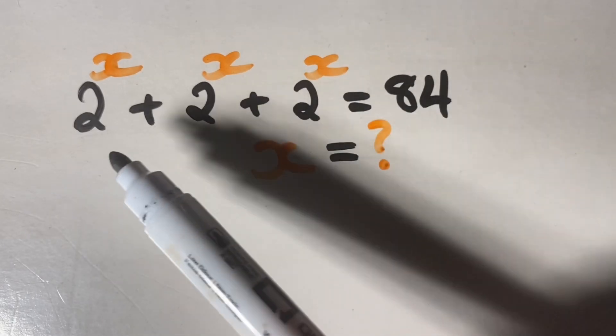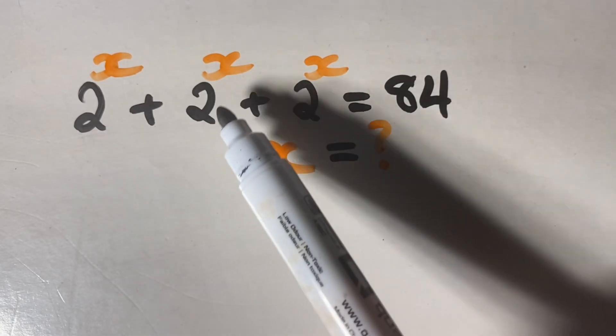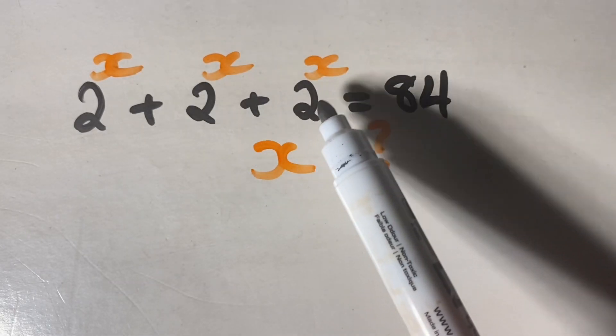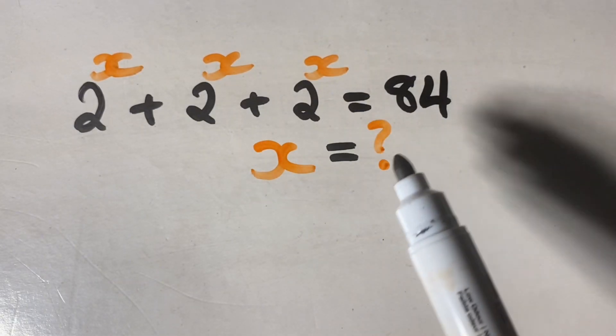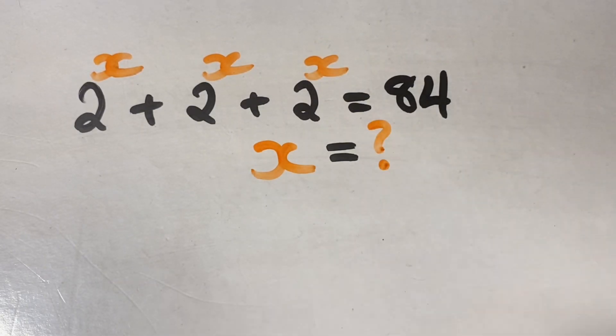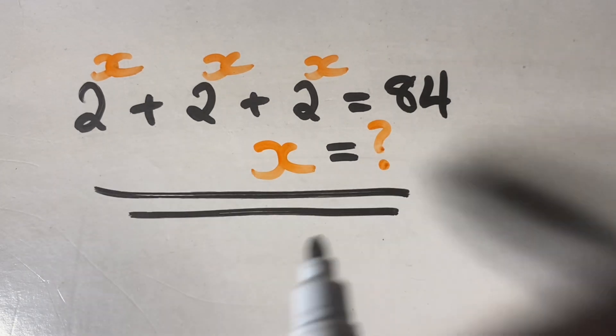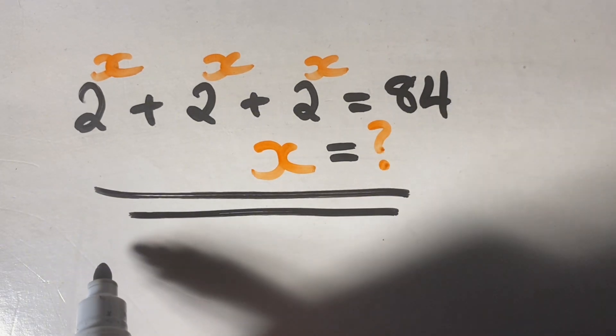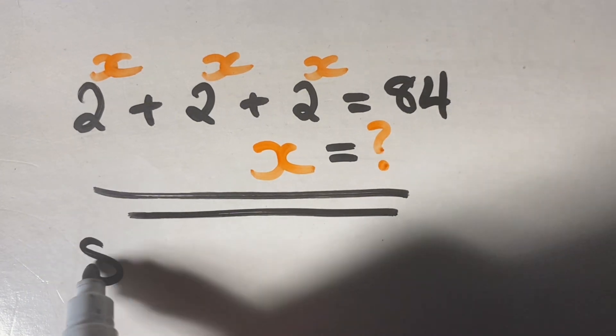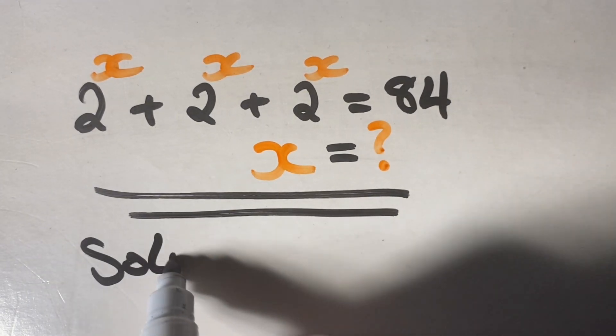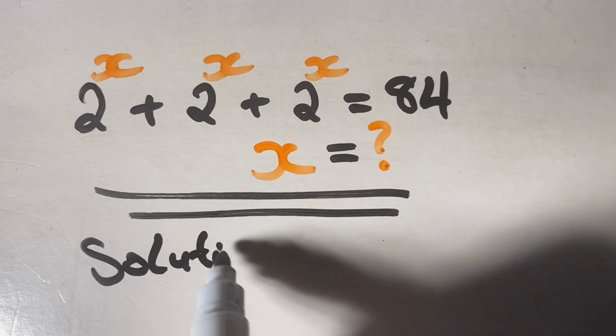Hello everyone, welcome back to my channel. Here we're going to solve this exponential equation where we have 2^x plus 2^x plus 2^x equals 84, and we're going to find the value of x.